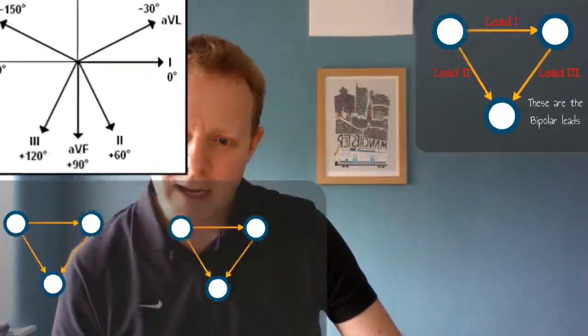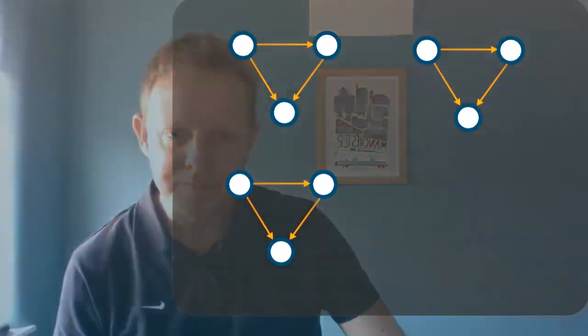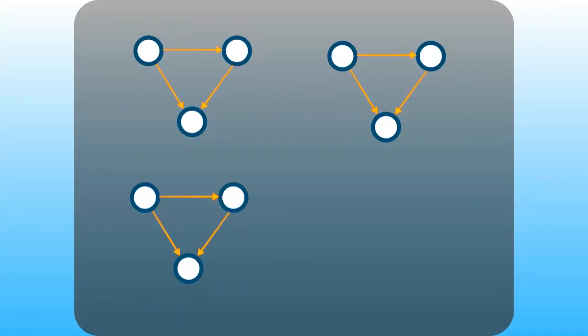So how do we get leads AVR, AVL, and AVF? Well, that's a little bit more complicated. For this, we're going to start by taking the average starting position between two electrodes and looking at the direction of travel towards another electrode. So let's take AVL for a start. As a starting position with our negative electrode, we're going to take the average between the right shoulder and the left foot, and we're going to look at the flow of electricity up towards the left shoulder. So it's looking left, laterally, and slightly up, so slightly higher than lead 1, at minus 30 degrees.